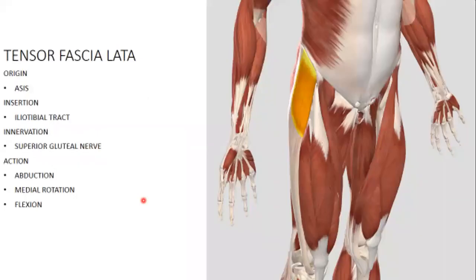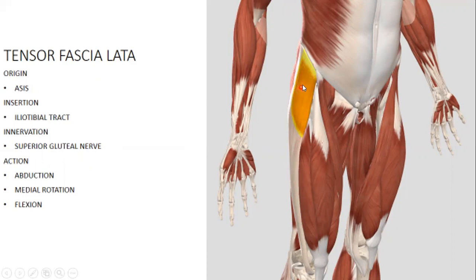The tensor fasciae latae was already covered when looking at the anterior thigh. It originates from the anterior superior iliac spine and inserts into the iliotibial tract — a thickening of the fascia lata, the deep fascia of the thigh, on the lateral aspect. Innervation is via the superior gluteal nerve. Its actions are abduction and medial rotation of the thigh, as well as flexion of the thigh.